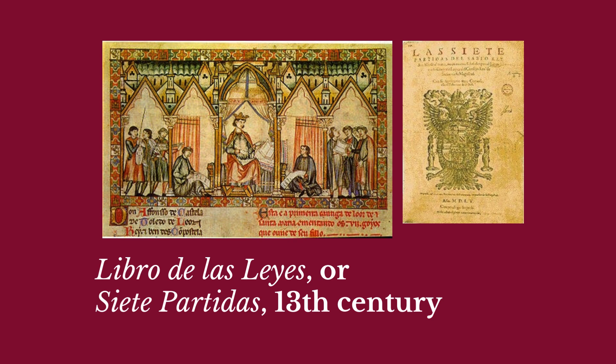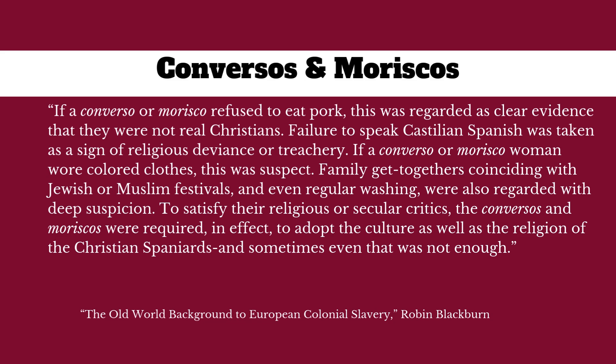From this week's reading on the conversos and moriscos: if a converso or morisco refused to eat pork, this was regarded as clear evidence that they were not real Christians. The conversos and moriscos are people who are nominally Christian in medieval Spain — conversos from families that were previously Jewish, moriscos from families that were previously Muslim. This could be a change from five years ago or a hundred years ago. But the families remain suspect. Because Jews and Muslims don't eat pork, but Christians do — this was regarded as clear evidence they were not real Christians.